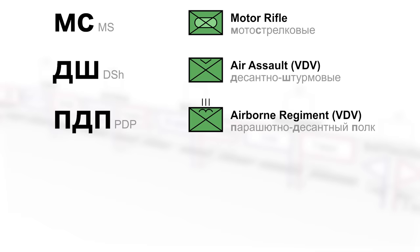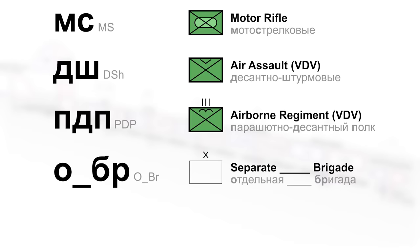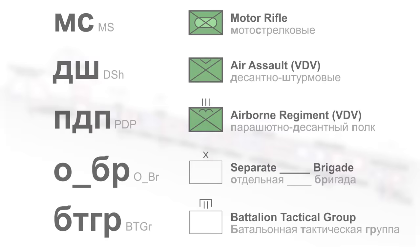In many cases, units will start with an O. It depends on the exact abbreviation, but this often means separate or independent. Most Russian maneuver brigades have the separate modifier because they aren't part of a division. So OMSBR is a separate motorized brigade. Meanwhile, BTGR means battalion tactical group.